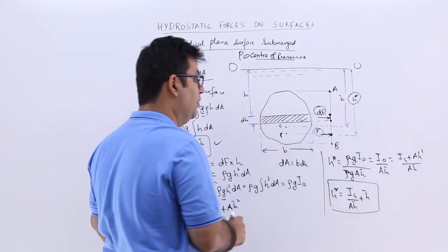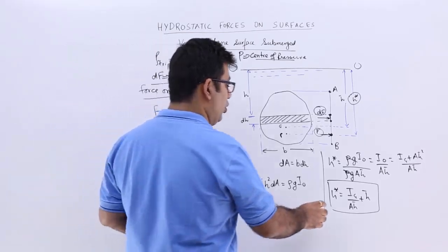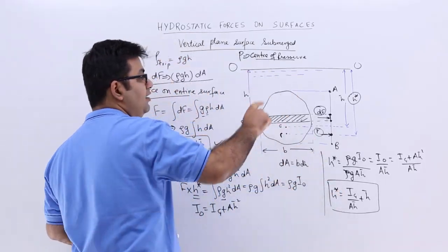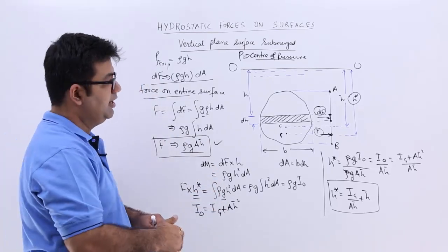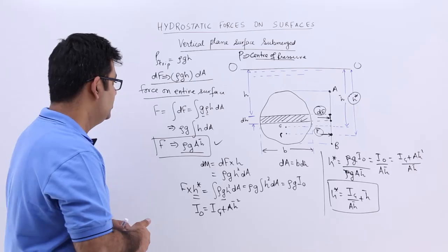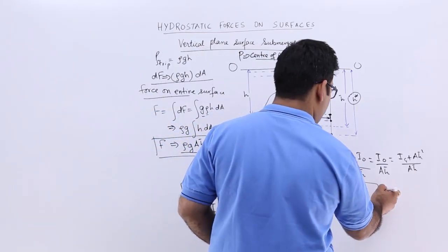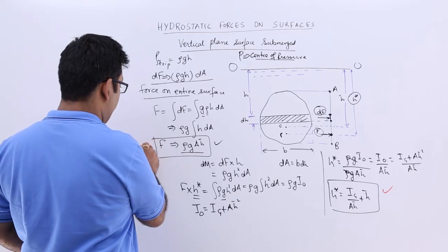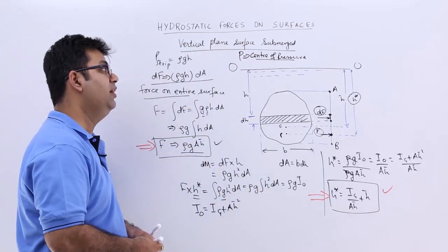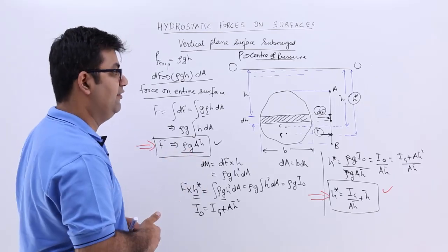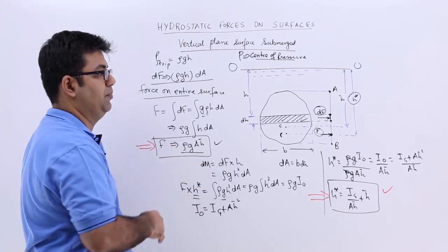This is the formula to find the location of the center of pressure from the free surface for a vertical plane surface submerged in a liquid. So there are two mathematical relations to understand and remember: first, the total pressure force, and second, the location of the center of pressure from the free surface. Now let us look at a simple question on this topic.